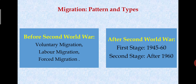After the Second World War, we can talk about migration in stages. The first stage is 1945 to 1960. The second stage is after 1960. In the 1945-1960 period, there are many types of migration. For example, in the USA and Canada, immigration from Asia increased significantly during this period.